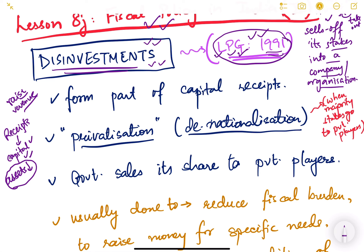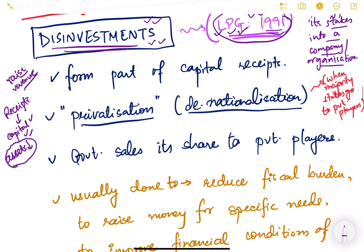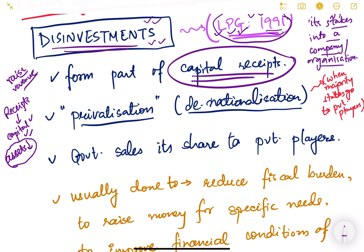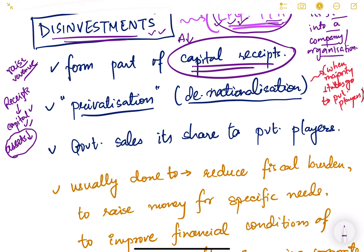LPG stands for liberalization, privatization, and globalization. We will study about this later in the following videos. After the LPG reforms of 1991, disinvestment policy was adopted.